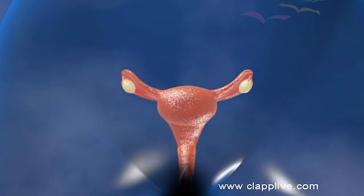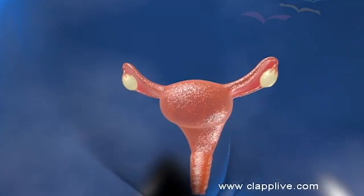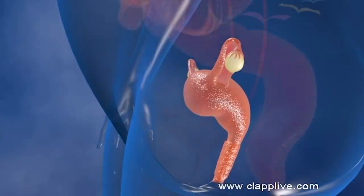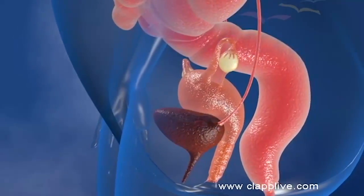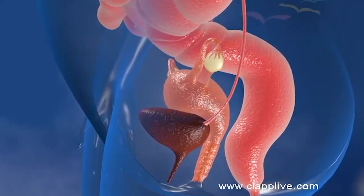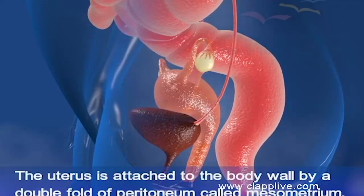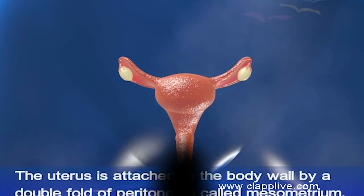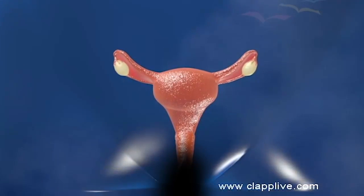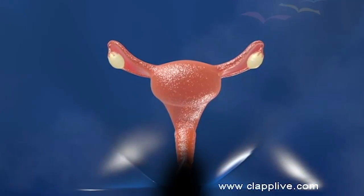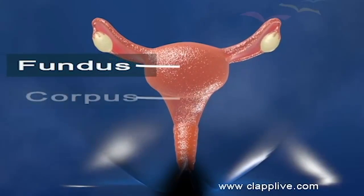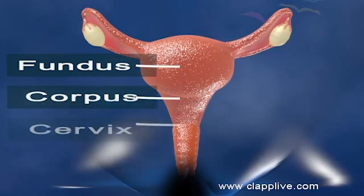The uterus is a hollow, muscular, and inverted pear-shaped structure, also known as the womb. It is located in the pelvic cavity between the urinary bladder and the rectum. The uterus is attached to the body wall by a double fold of peritoneum called the mesometrium. It has an upper dome-shaped part called the fundus, a middle large part called the corpus, and a narrow part called the cervix that projects into the vagina.